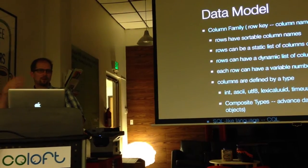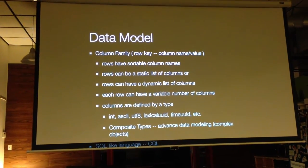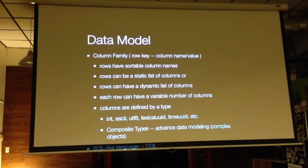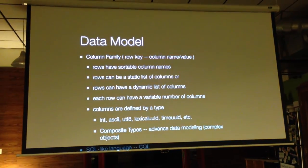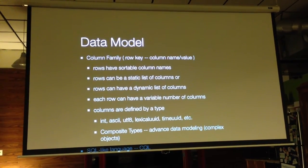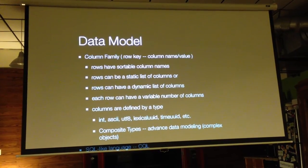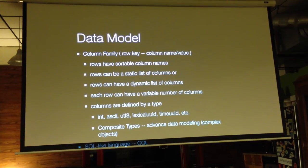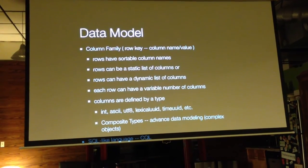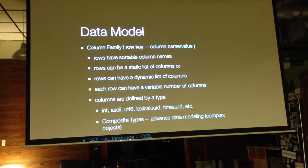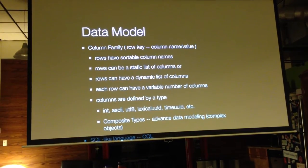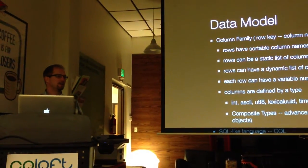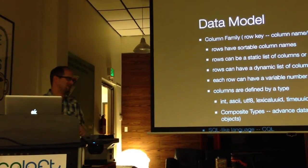Rows can have a static list of columns or a dynamic list like a timeline, with variable number of columns per row. Data types include int, ASCII, UTF-8, lexical UUID, time UUID, byte types — about twelve of them — usable for both column names and row keys. Composite types allow you to model complex hierarchical objects, like hashes of hashes or a dictionary within a dictionary — a more advanced data modeling technique.